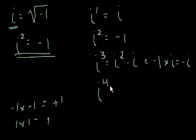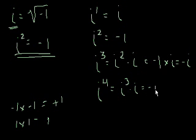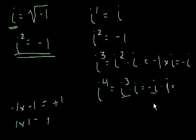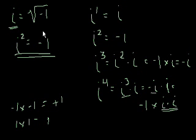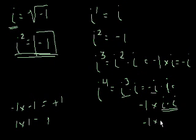And i to the fourth would equal i to the third times i. I'm just using exponent rules here. Well, i to the third is negative i times i. What's negative i times i? That's the same thing as negative 1 times i times i. And what's i times i? By definition, i squared is equal to negative 1. So that equals negative 1 times negative 1, which equals 1.